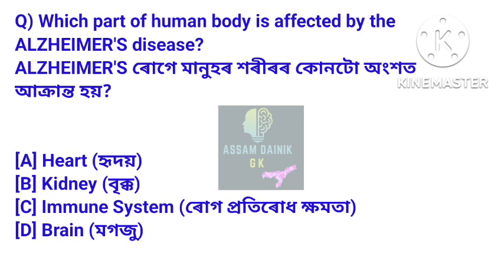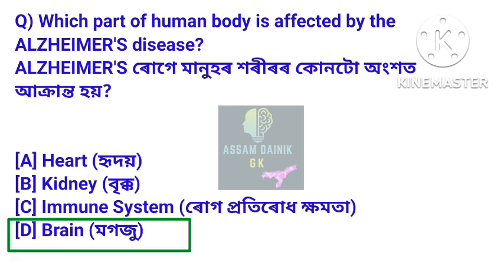Next question: Which part of the human body is affected by Alzheimer's disease? Answer: Brain. Alzheimer's disease affects the brain.